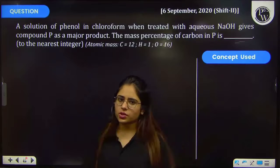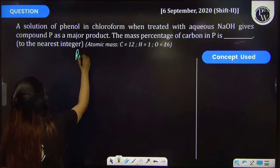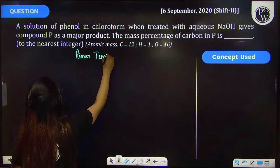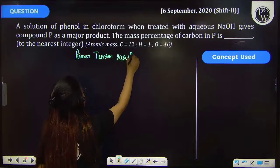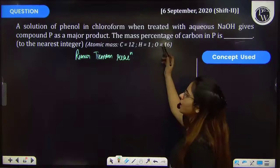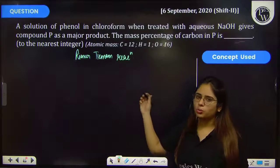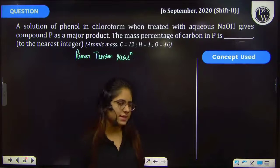So this question is of a reaction Riemel-Tyman reaction. You should know the Riemel-Tyman reaction. Further, you have to calculate the mass percent of the carbon present in this compound, which is the product P. So the key concept that you will be using here is the percentage composition.